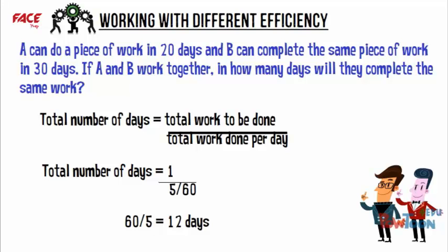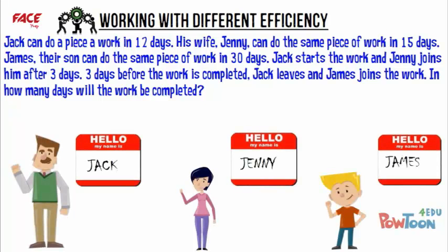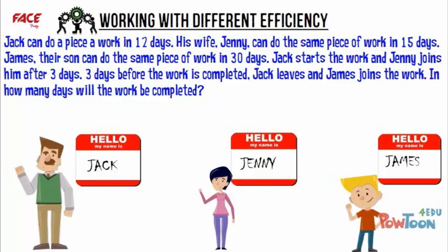Let's solve a slightly complicated problem. Jack can do a piece of work in 12 days. His wife Jenny can do the same piece of work in 15 days. James, their son, can do the same piece of work in 30 days. Jack starts the work and Jenny joins him after 3 days. 3 days before the work is completed, Jack leaves and James joins the work. In how many days will the work be completed?